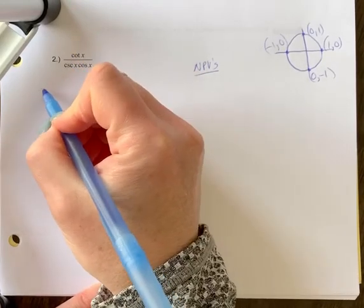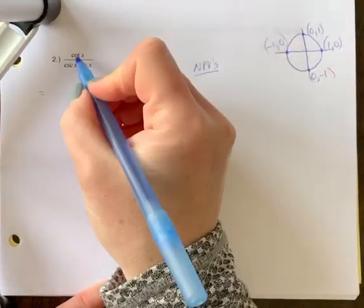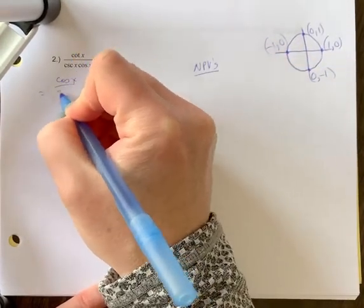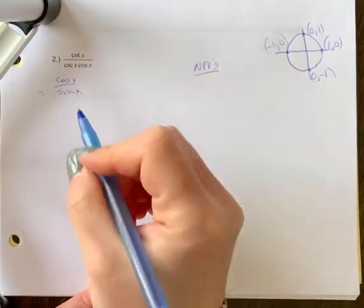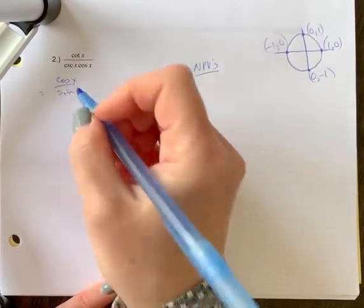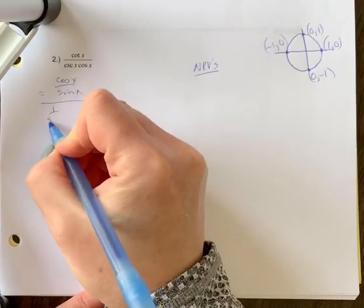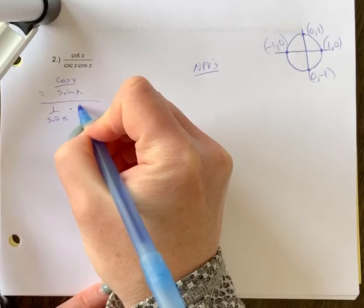So again, I look to write any of these as a fraction or change them up. So cotan can be written as cos x over sine x. It could be written as 1 over tan, but we don't have tan anywhere else. So it's often simpler to go to cos x over sine x. Cosecant x is 1 over sine x. Cos x doesn't change.